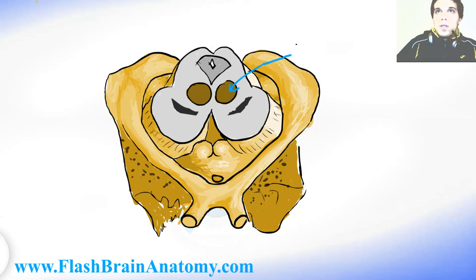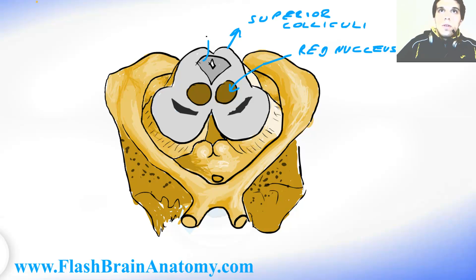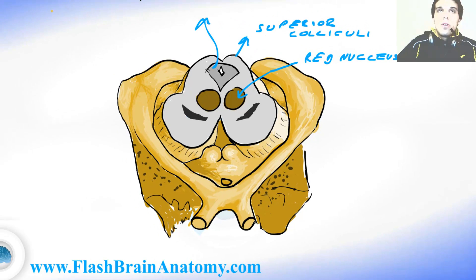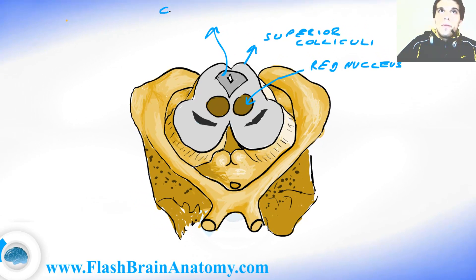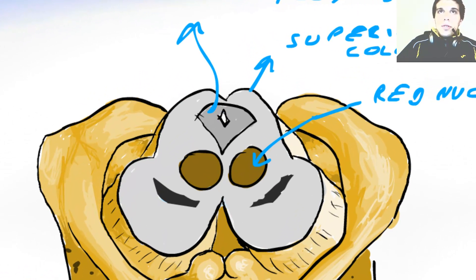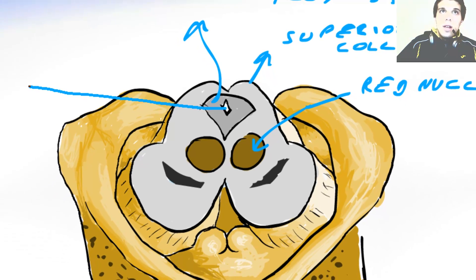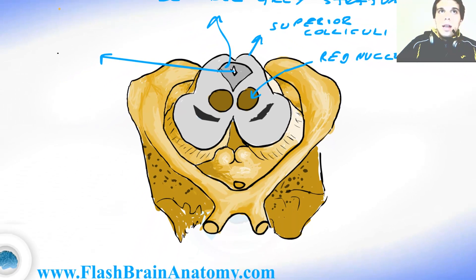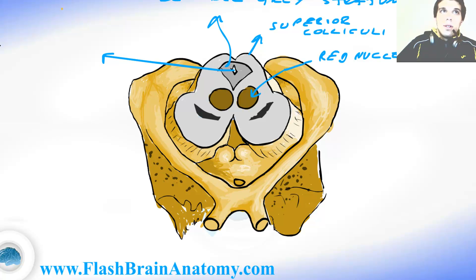This over here was the red nucleus. This over here were the superior colliculi. This over here was the central gray stratum. And this structure is the cerebral aqueduct — it is a tiny canal that connects the third and fourth ventricle. This aqueduct is what separates the tegmentum from the tectum.